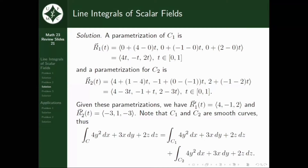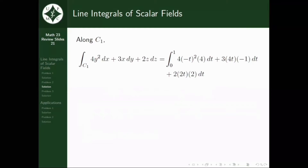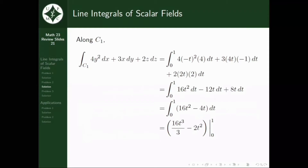Along c1, the line integral equals the integral from 0 to 1 of 4(negative t)² times 4 dt plus 3(4t) times negative 1 dt plus 2(2t) times 2 dt. Simplifying, we get the integral of 16t² minus 4t dt from 0 to 1, which evaluates to 10 thirds.